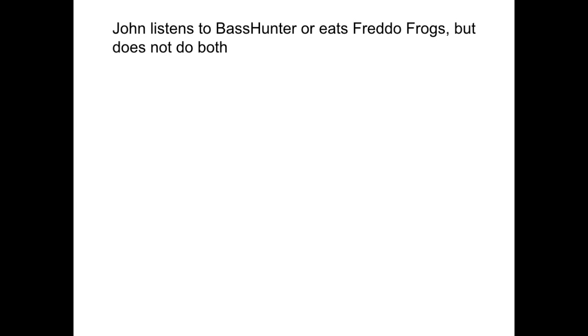So we've got John listens to Base Hunter or he eats Frodo Frogs, but he does not do both. Now the or would imply that we use a normal or. But with a normal or, if they are both true, so Base Hunter and Frodo Frogs, then it's true. But it's said here that it can't be both. So we've got this cool thing called exclusive or. And in the circuit diagram, it's represented with the normal or, but with an extra line out the front. And what it says is it is only true when the two values are different.